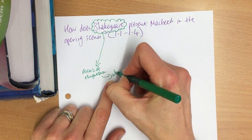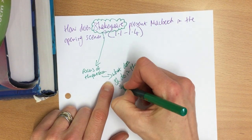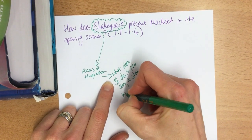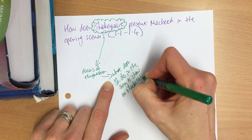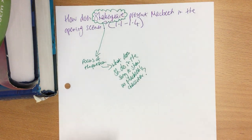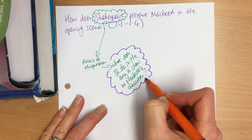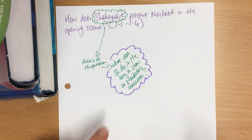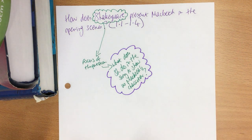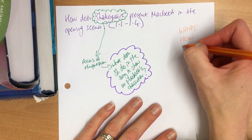So what does Shakespeare do in the story to show us Macbeth's character? We've rewritten the question: rather than 'how does Shakespeare present Macbeth in the opening scenes,' it becomes 'what does Shakespeare do in the story to show us Macbeth's character?' That's fine to rewrite it because we're doing the same thing. From here we need to think about what Shakespeare does, how on earth he's done it, and what is the point.